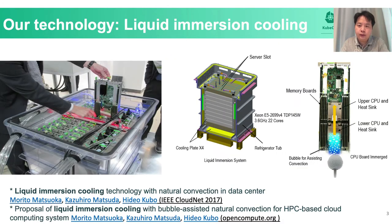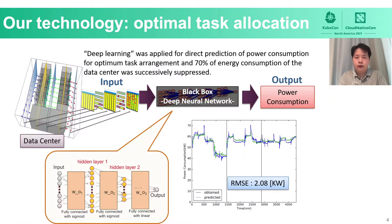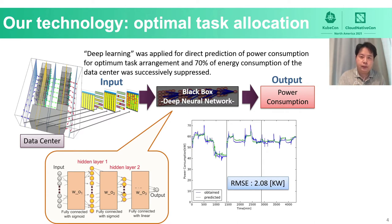We have developed several data center power reduction techniques in our laboratory. One example, as shown in this figure, was using liquid immersion cooling technology to reduce system temperature. We have also used machine learning techniques such as deep learning to predict data center power consumption. Based on accurate power consumption prediction, an optimal task allocation plan can be generated, and user requests are dispatched based on this plan, so the power consumption of the data center can be controlled and reduced. The method proposed in this talk extends the concept of optimal workload allocation to Kubernetes architecture.